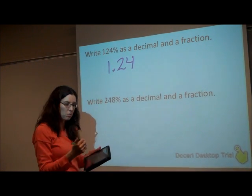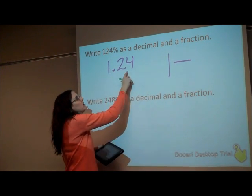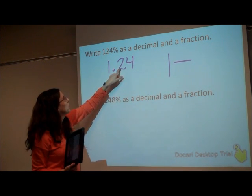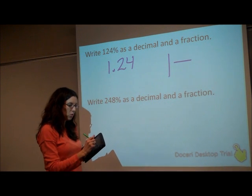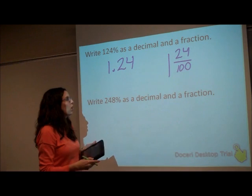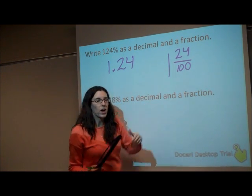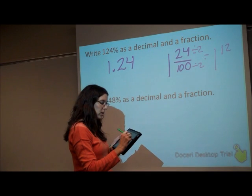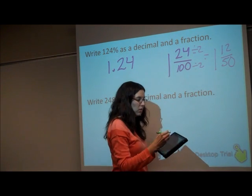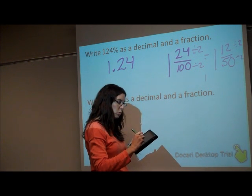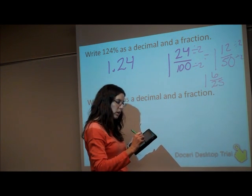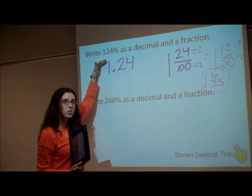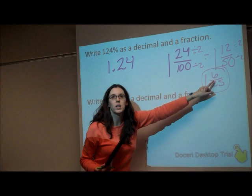Whatever is to the left of our decimal is going to be the whole part of our mixed number, so it's 1. Then, thinking back, how do we change 24 hundredths into a fraction? Remember — tenths, hundredths — so it's 24 over 100. Go ahead and simplify. Let's start by dividing both by 2, giving us 1 and 12 fiftieths. I can still divide by 2, so that is 1 and 6 twenty-fifths. I can't simplify anymore. So 124% is the same as 1.24, which is the same as 1 and 6 twenty-fifths.